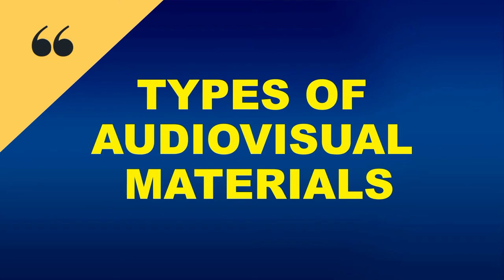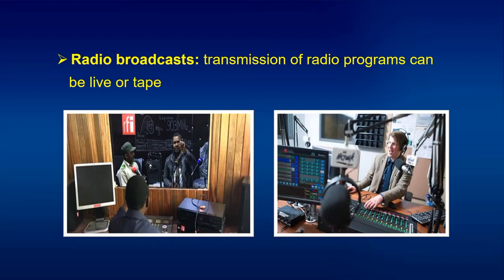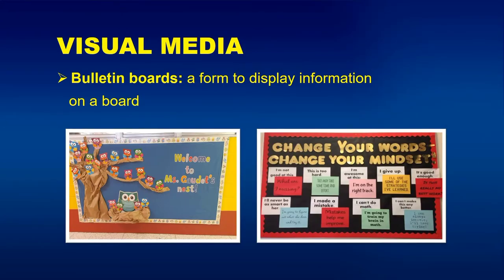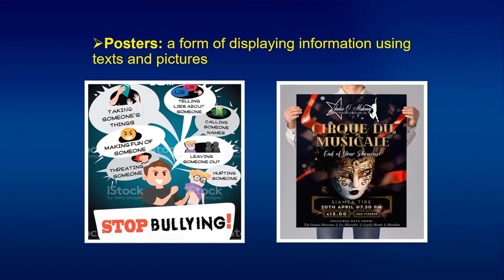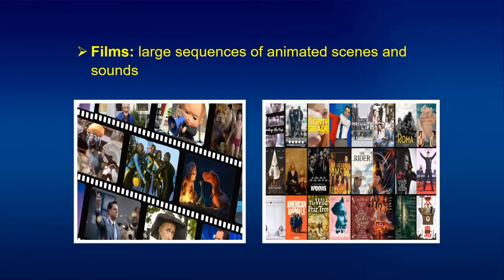Types of audio-visual materials. Audio Recordings: these may come in cassettes or CDs. Radio Broadcast: transmission of radio programs, which can be live or tape. Visual Media — Bulletin Boards: a form to display information on a board. Posters: a form of displaying information using text and pictures. Audio-Visual Media — Motion Picture Videos: videos of sound mixed with motion images. Films.